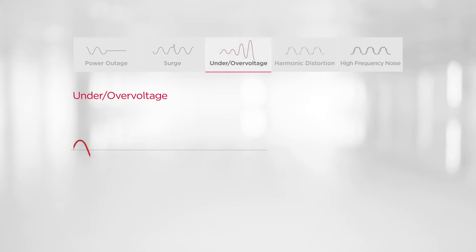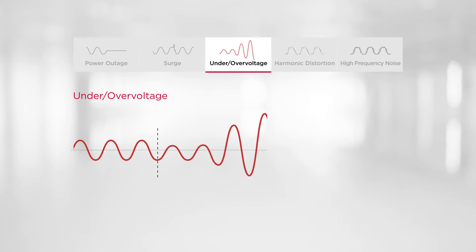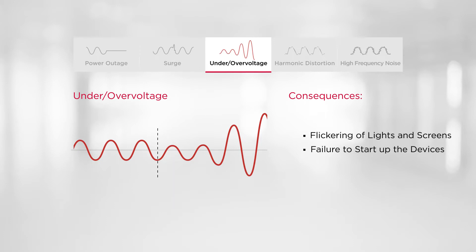On the other hand, an undervoltage and overvoltage is an incoming voltage lower or higher than the normal level. This kind of power problem can cause flickering of lights and screens or failure to start up electronic devices.